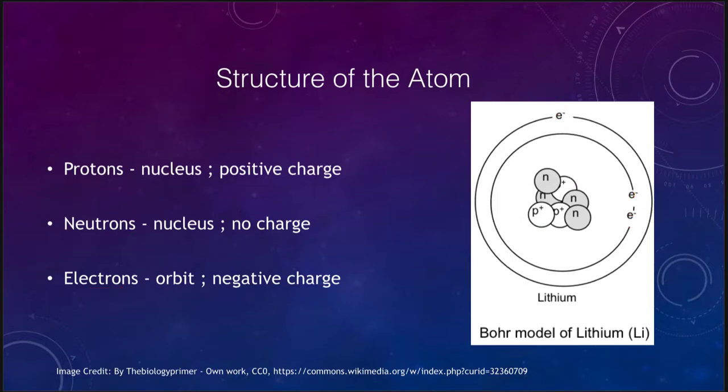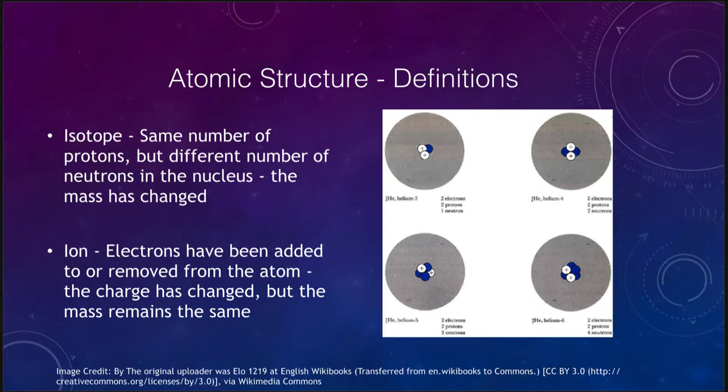Let's look at a few definitions that we need for atomic structure. We'll start off with the term isotope, which are two atoms that have the same number of protons but different numbers of neutrons in the nucleus. Some examples of this would be helium: helium-3, helium-4, helium-5, and helium-6. Those are all helium because the atom is defined by the number of protons in the nucleus and each of these has two protons. So they all have the same number of protons. The difference is the number of neutrons that they have.